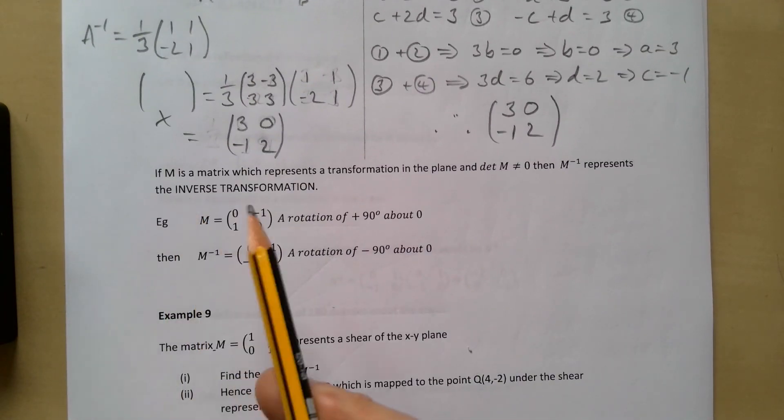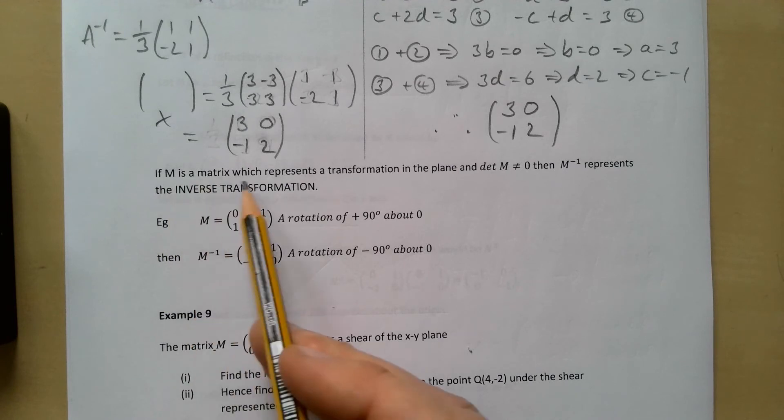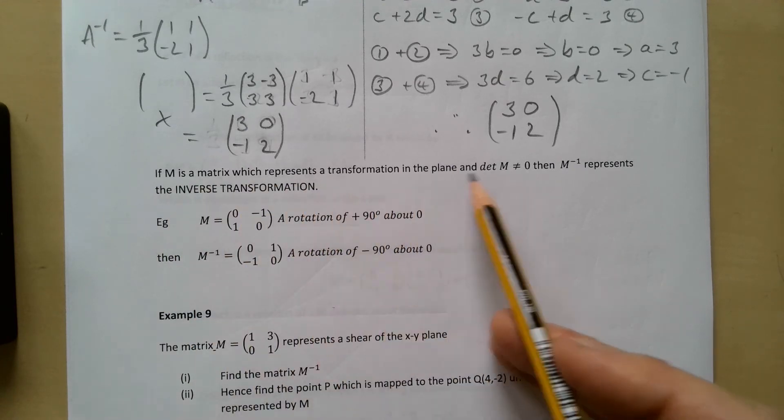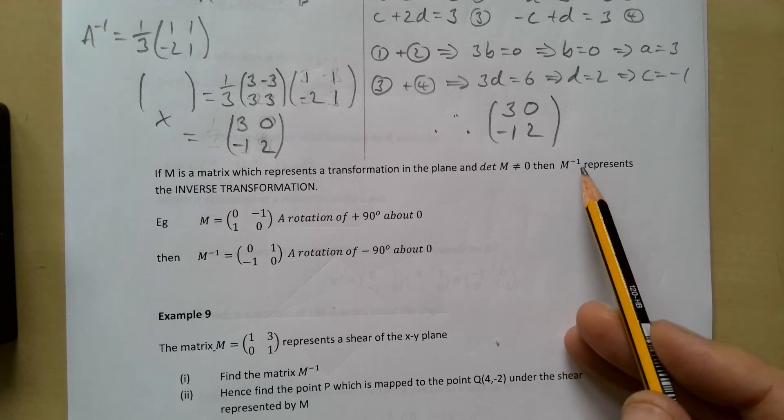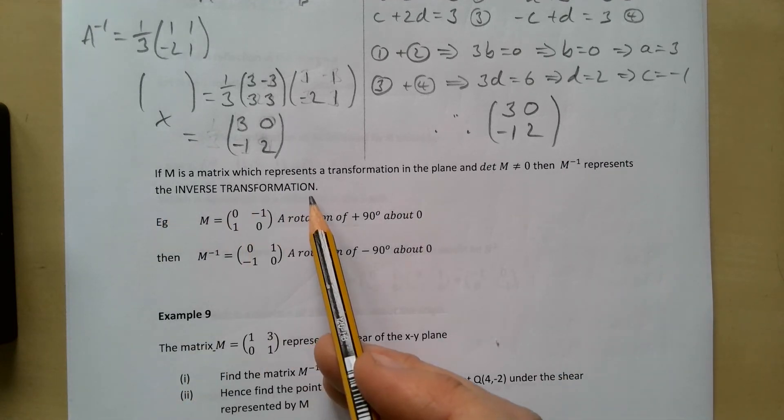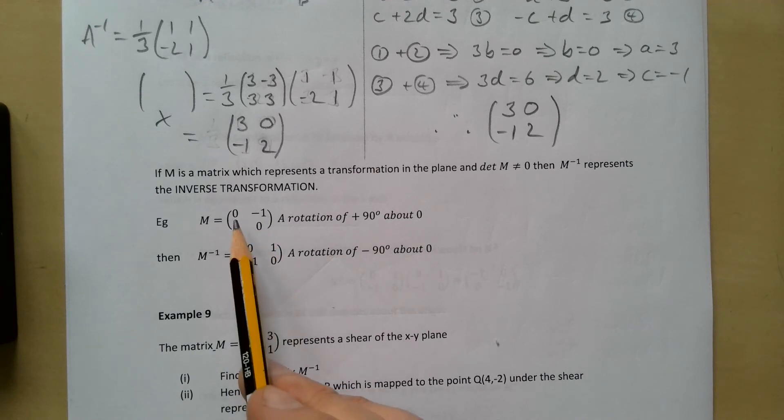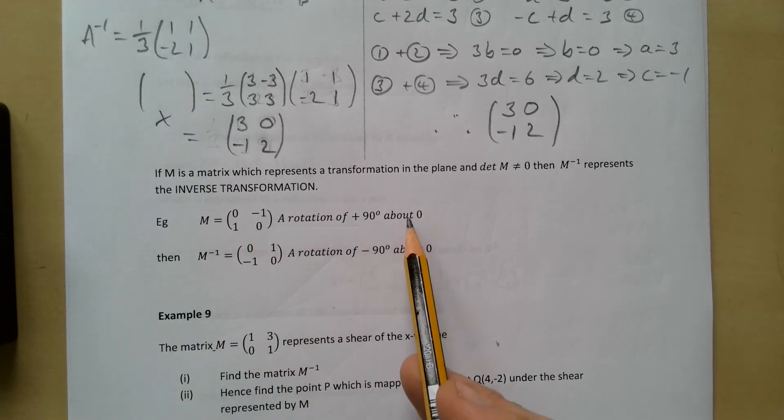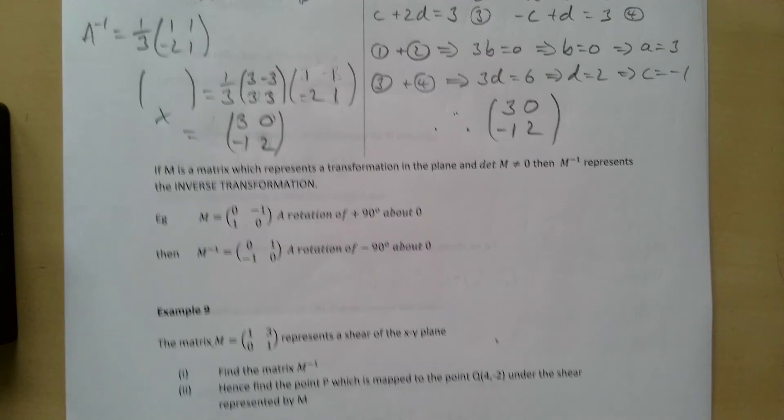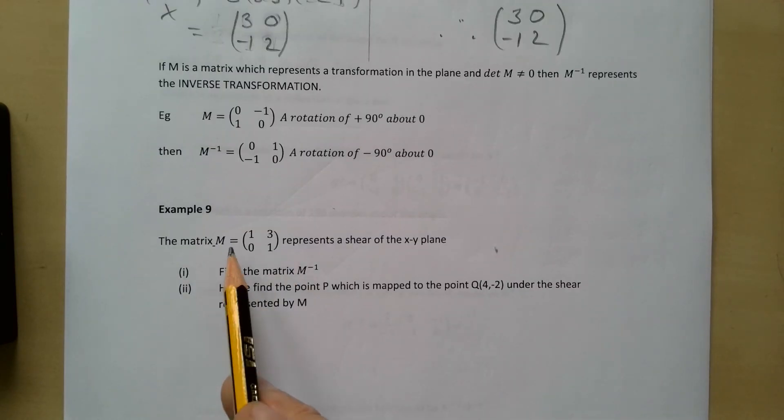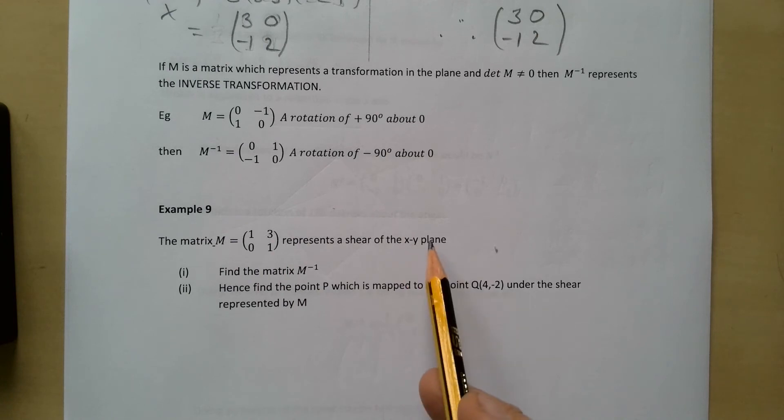Next concept then, I'm sure this is fairly intuitive: if M is a matrix which represents a transformation in the plane and the determinant is not equal to zero, then M to the minus 1, the inverse, represents the inverse transformation. For example, [0 -1; 1 0] is a rotation of 90 degrees about zero, then the inverse of this is a rotation back the other way.